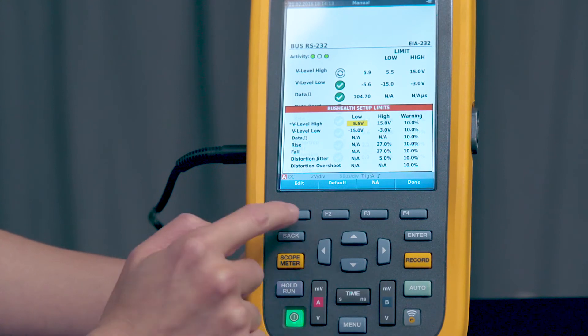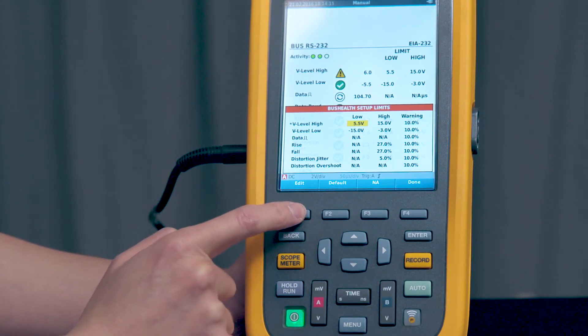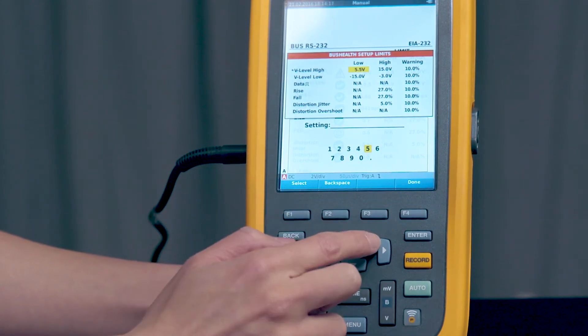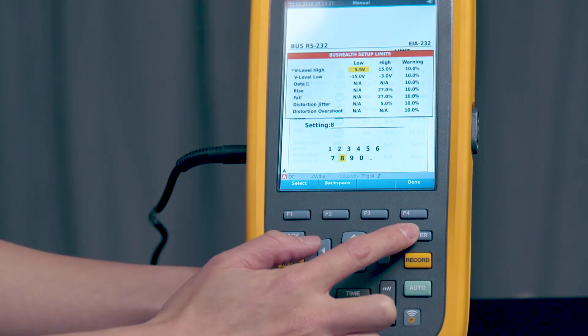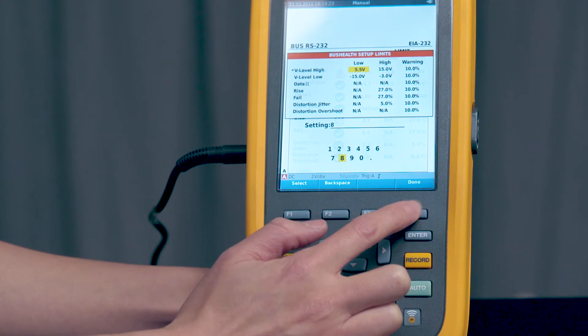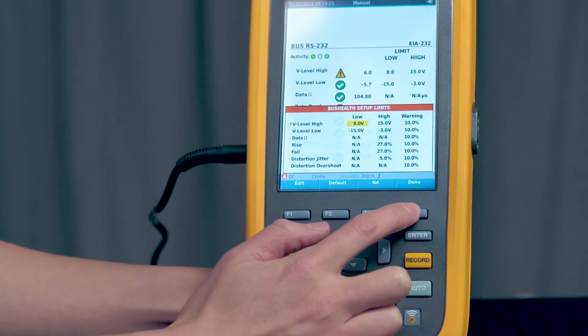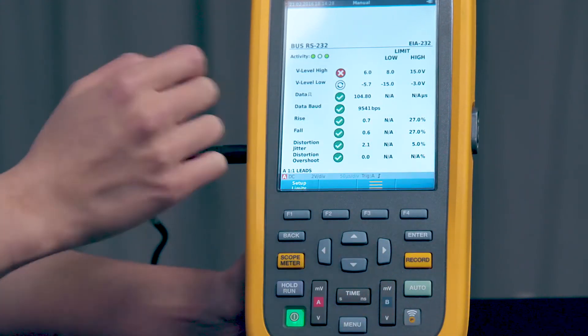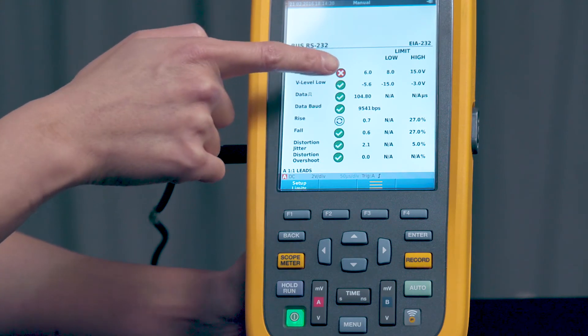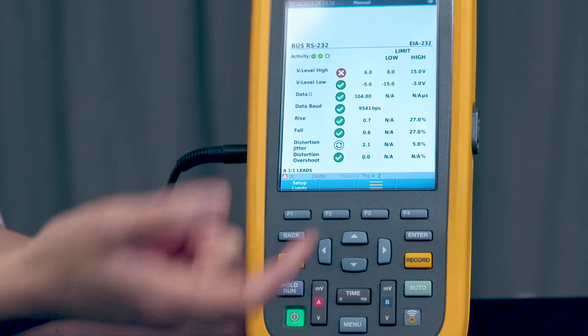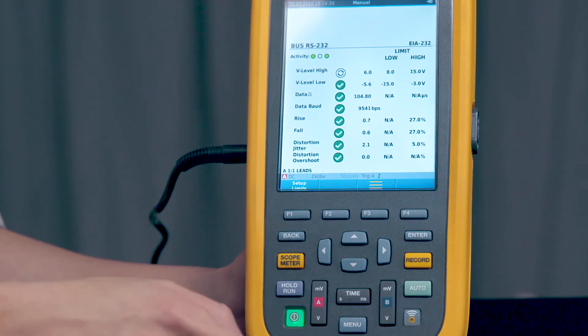So we'll go in and we'll edit the low limit again by pressing F1. This time we'll change it to 8 for a regular RS-232 and then press F4 for done and F4 for done again. And now we have an X and that means it's outside of the allowable range.